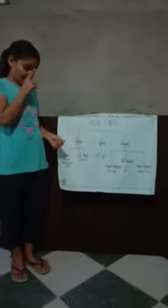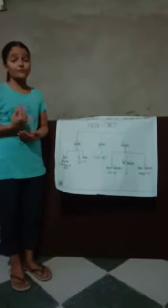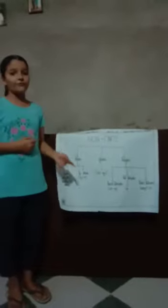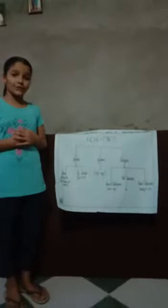In bare infinitive, we use only the first form of verb. In to-infinitive, we use 'to' plus first form of verb.